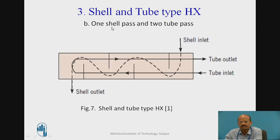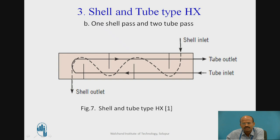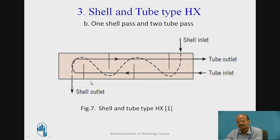In the second type of shell and tube heat exchanger, there is one shell and two tube passes. The hot fluid flows through the first pass, is then redirected and kept inside the same shell for the second pass — that is why it is called one shell and two tube passes. The cold fluid is given multiple passes using baffles, while the shell remains one.